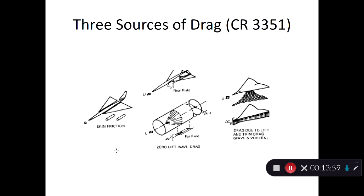The sources of drag are: skin friction from any wetted area whether laminar or turbulent; zero-lift wave drag from a non-lifting body due to thickness; induced drag from the main wing and empennage; and wave drag associated with angle of attack. Recall from Acker's rule for a flat plate at angle of attack, CD = 4α² / λ, so the higher the angle of attack, the higher the wave drag.